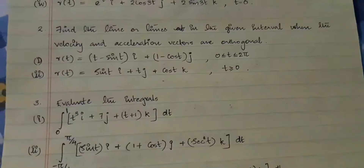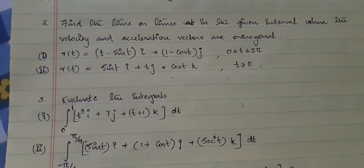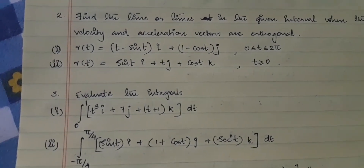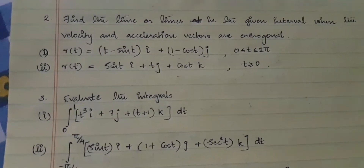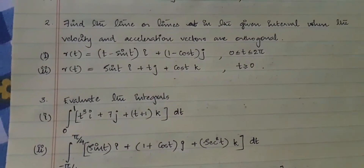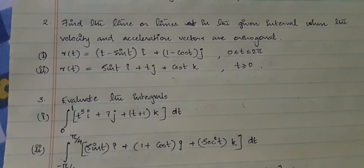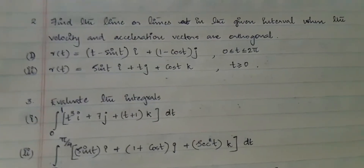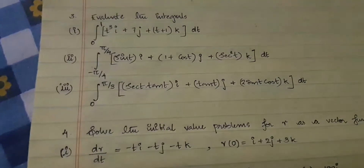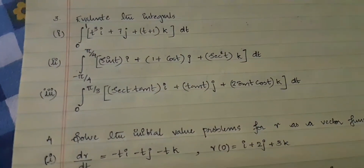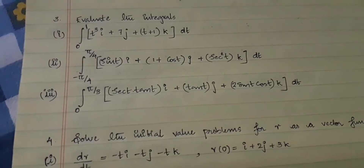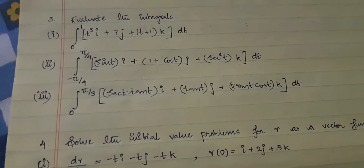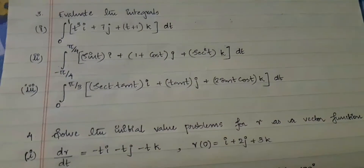For the second set of questions, check whether at any time the velocity and acceleration vectors are orthogonal. All you have to do is find the velocity vector and the acceleration vector, equate their dot product to zero, and find which values of t satisfy that condition. For the third part, evaluate the integrals — these are all definite integrals, so there is no problem with integration constants.